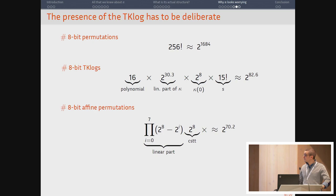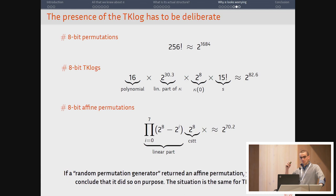To answer this one, I need to do some combinatorics. So you have 2^1,684 roughly 8-bit permutations. You have 2^83 TK logs. And to put this number into perspective, you have about 2^70 affine permutations. So if someone were to give you an affine permutation and tell you that they had generated it using a random permutation generator, you would probably not believe them and believe that there is some sort of bias into their generation algorithm. It's the same here.